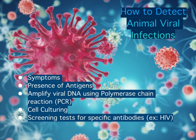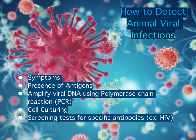How to detect animal viral infections. One way to detect animal virus infections is through symptoms the patient might display. For example, if a patient has influenza, some symptoms they could display are a fever, fatigue, congestion, and nausea. Also, if something is a virus, there is a presence of antigens — antigens are a toxin or other foreign substance which induces an immune response in the body. Another way of detecting a virus is through the application of viral DNA using polymerase chain reactions, which can be used to detect if the pathogen is present and amplify regions of its DNA from a blood or tissue sample. Cell culturing is also helpful — if the cell shows changes such as cytopathic effects, then the cell culture is positive. Screening tests, done by taking a blood sample, look for specific antibodies that would indicate if someone was infected by a virus, such as HIV.